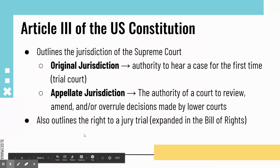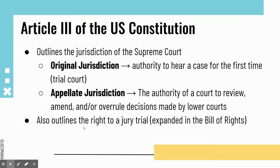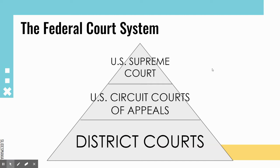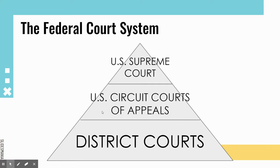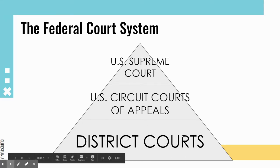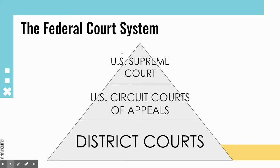Article 3 also outlines the right to a jury trial, which is expanded in the Bill of Rights through various amendments. The founders thought this was an important piece to include after their treatment under British rule. Now, our federal court system can be thought of like a pyramid. The further you go up the pyramid, the more authority they have and the fewer courts there are. At the very bottom are district courts — the most numerous. Above those are the U.S. Circuit Courts of Appeals, and then at the very top, the highest authority, is the U.S. Supreme Court.